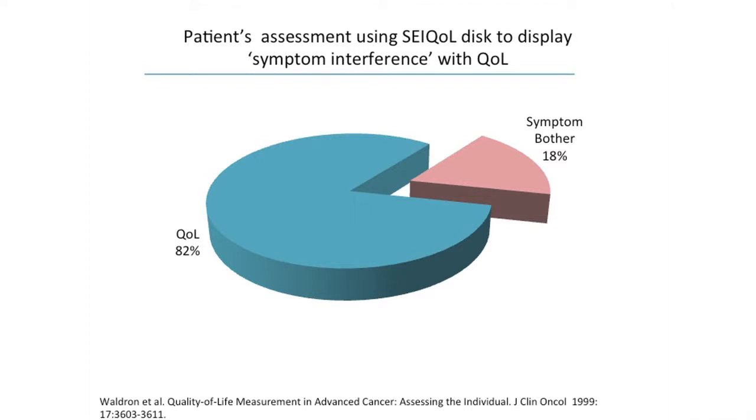What happened when the patient was asked to do the same exercise? They perceived that the symptoms were not to be disregarded, but they were actually placing more emphasis on other things at this point in their life — spirituality, family, connections with other people were of more priority in terms of their quality of life than the actual symptoms of their condition. This gives us a sense of how our perceptions as clinicians of what a person is experiencing and prioritizing might not always be accurate.